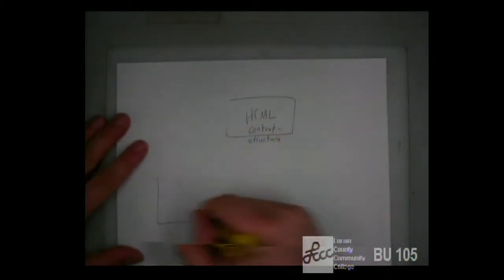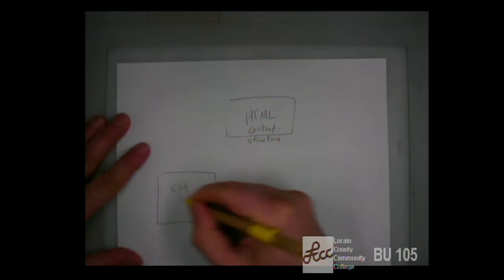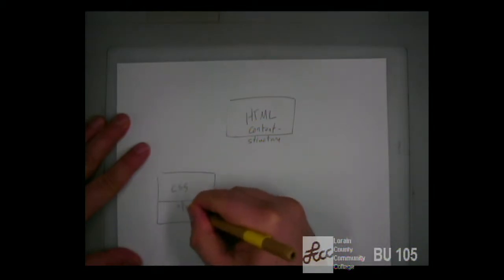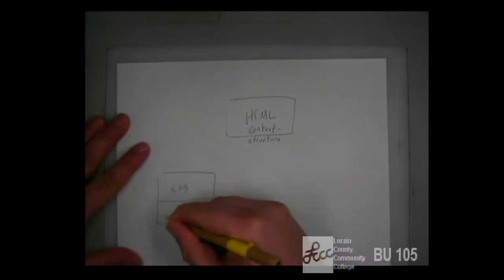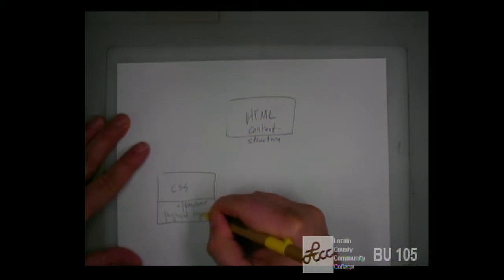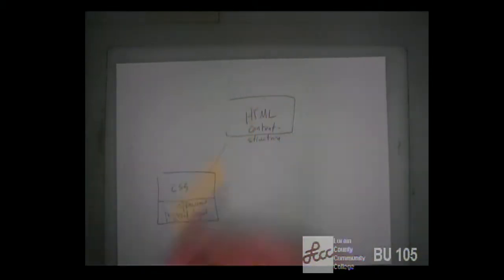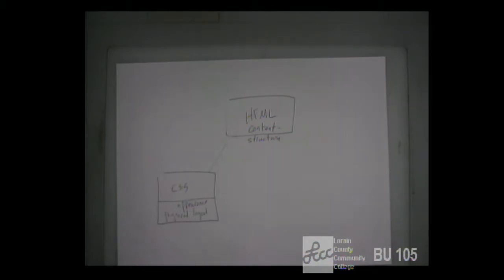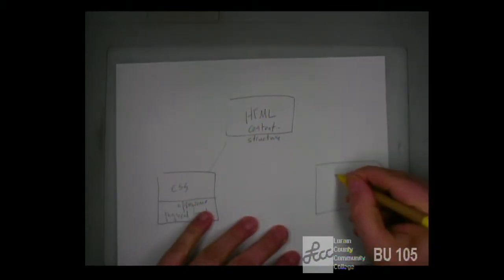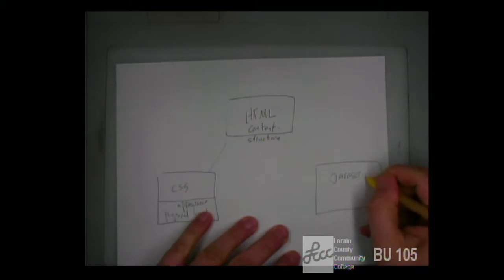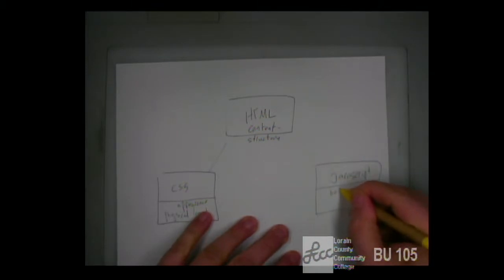We've used CSS for the appearance of the page and for the physical layout. The physical layout really relates to the structure, because usually we want the physical layout to reflect the structure — the header, the nav, each section — we want each to look a certain way. JavaScript comes into the mix by bringing in behavior and interactivity.